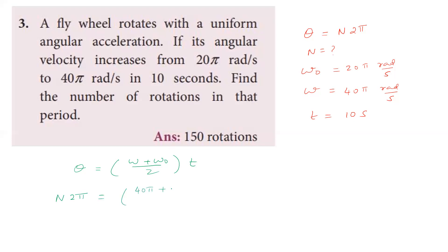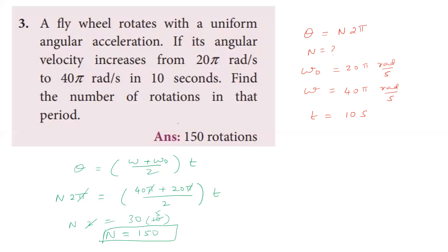The initial angular velocity is 20π and final is 40π. So n × 2π = (40π + 20π)/2 × 10. Cancelling π: n × 2 = (60/2) × 10 = 30 × 10 = 300. Wait — n × 2 = 300, so n = 150. The number of rotations is 150.